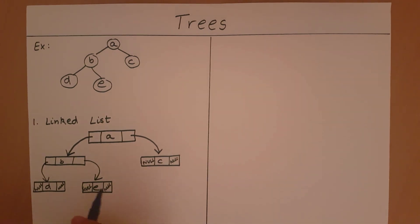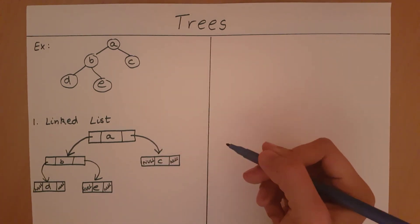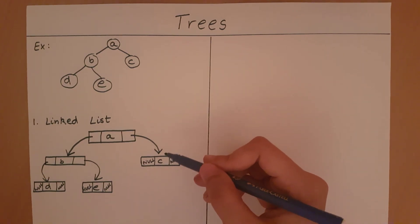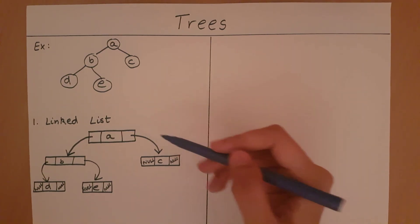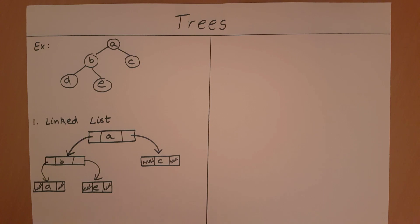As a variation to the same method, you can also give a pointer to the parent of a particular node. For example, C is going to have a pointer to A, and B will have a pointer to A, indicating that A is the parent. This is just an addition you could implement, but the basic linked list implementation uses a left child and a right child pointer.